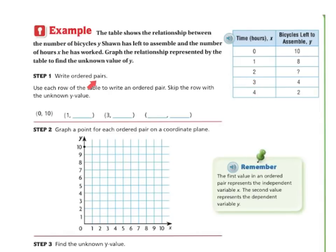So first let's write the ordered pairs. Use the rows of the table to write the ordered pair, and skip the row with the unknown value. So we have 0 and 10, then 1 and 8. Next one is 3 and 4 because we skipped the 2. And then the next one is 4 and 2.